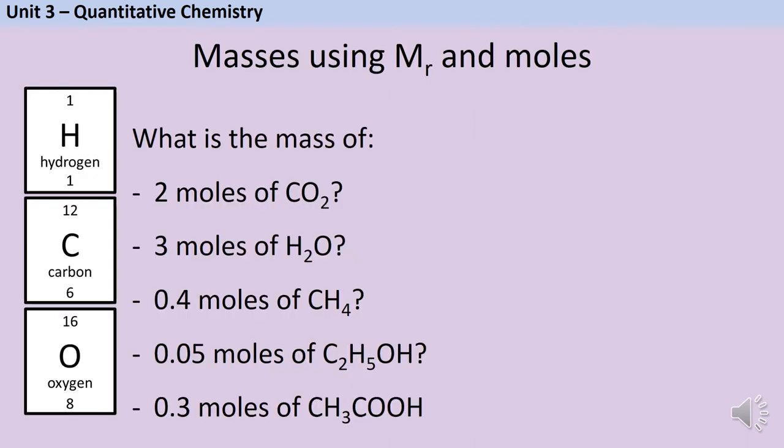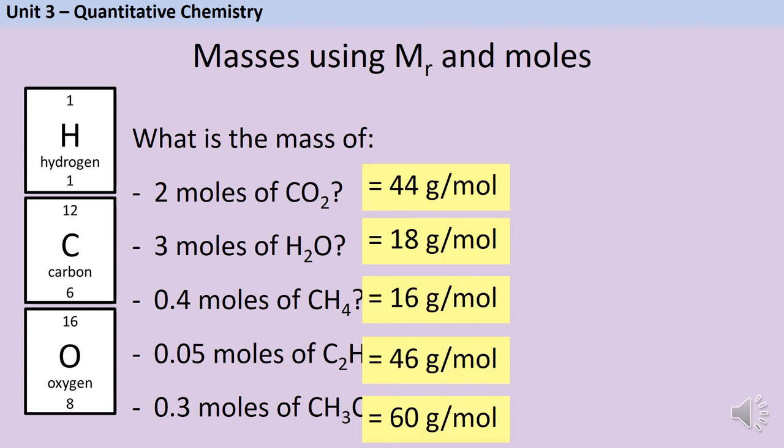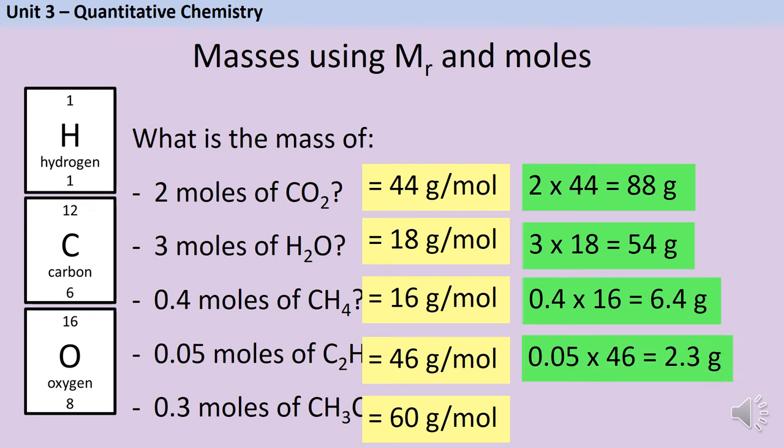For each one of these calculations we're going to use the relative formula masses that we just worked out in the previous section. Now remember, mass equals Mr times mole, so we need to multiply the relative formula mass in the yellow box by the number of moles. So 44 times 2 is 88 grams. Remember these answers are masses so you need to be giving your answer in grams. 3 times 18 is 54 grams, 0.4 times 16 is 6.4 grams, 0.05 times 46 is 2.3 grams, and 0.3 times 60 is 18 grams.